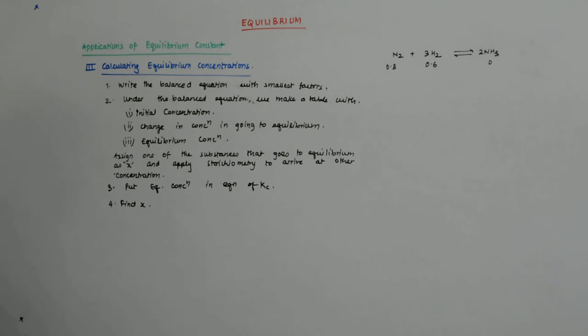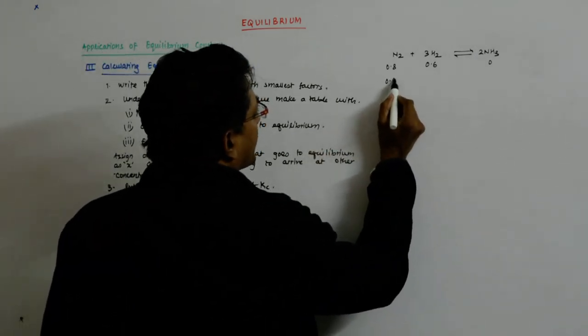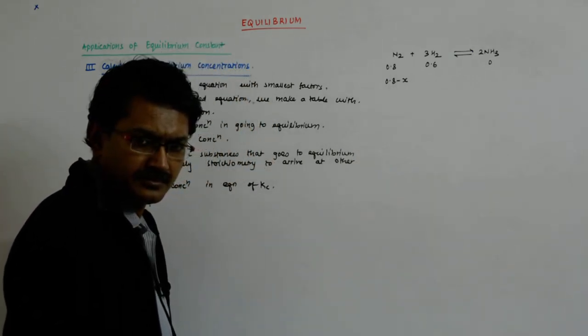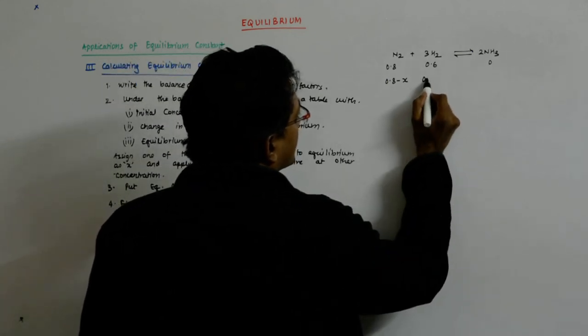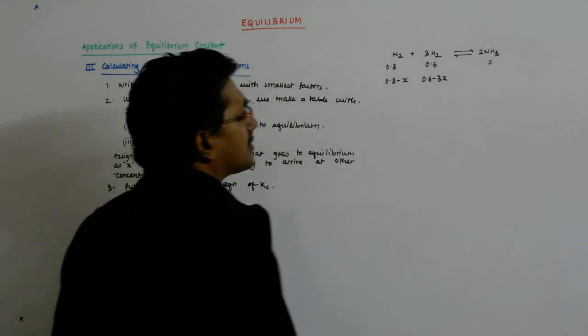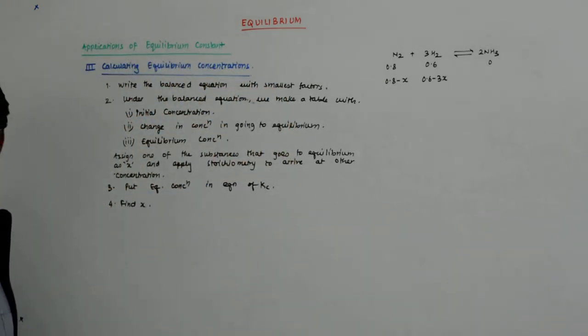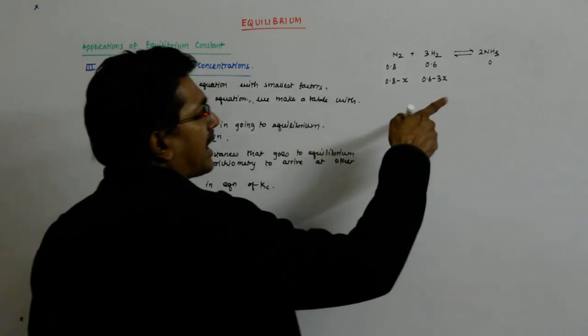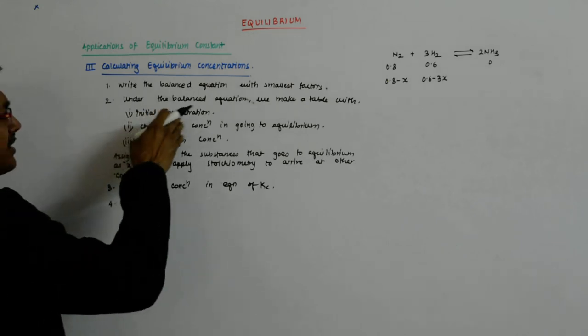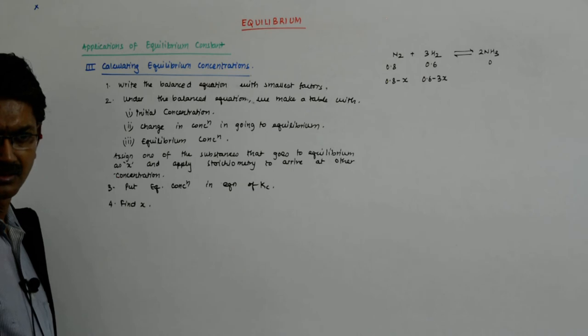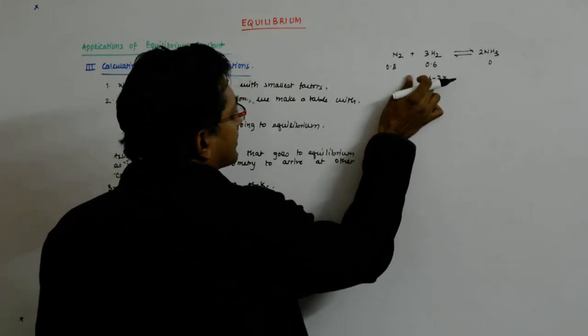You'll take which to be taken as x. So you should write 0.8 minus X and here 0.6 minus 3X. Why 3X? Because of the stoichiometry, 1 and 3. So you write the equilibrium concentration, you write the change in concentration.